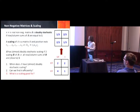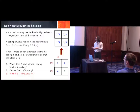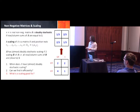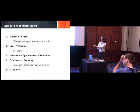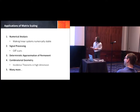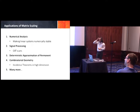Once you see this problem, three questions come to mind. One: when does A have a doubly stochastic scaling? Two: if it has a doubly stochastic scaling, can we find it efficiently? Three: what is the scaling good for, in theory and in practice? I'm going to address question three first, then return to one and two. Applications of matrix scaling are plentiful: numerical analysis, signal processing, deterministic approximation of the permanent, combinatorial geometry, incidence theorems for high-dimensional objects, and many more.